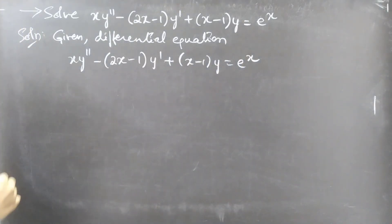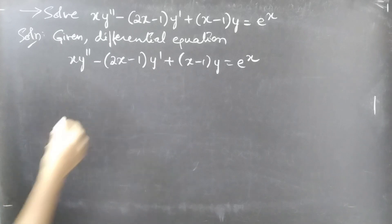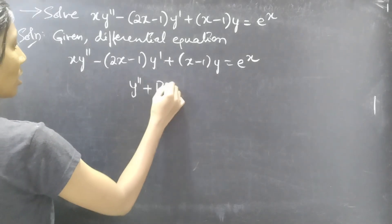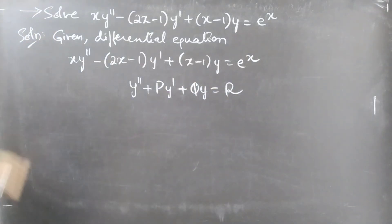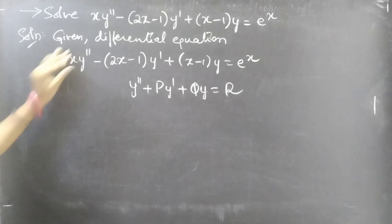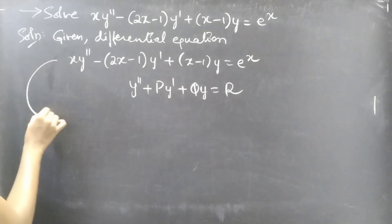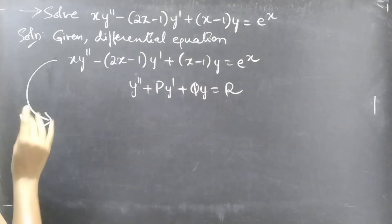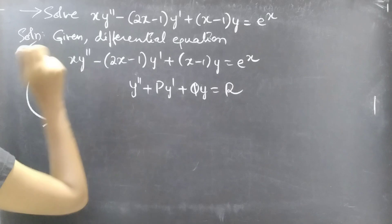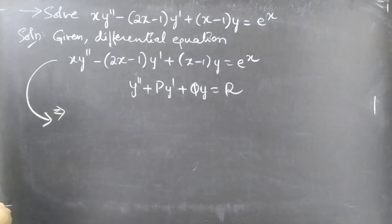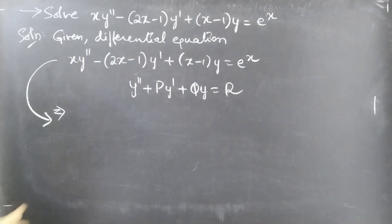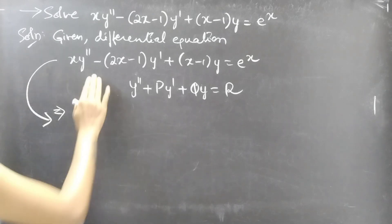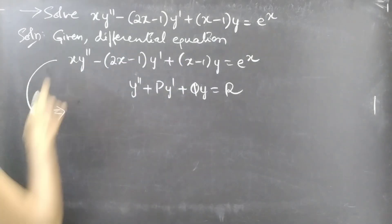We have to write the given differential equation in standard form of second order linear equation, that is y'' + Py' + Qy = R. For that we need to make the coefficient of y'' equal to unity. So we divide both sides of the equation by x.